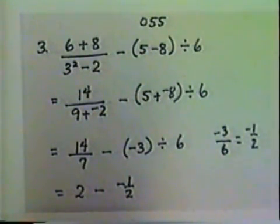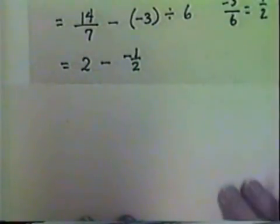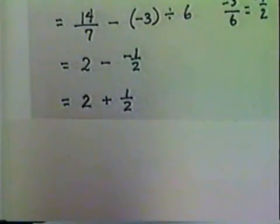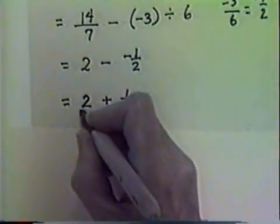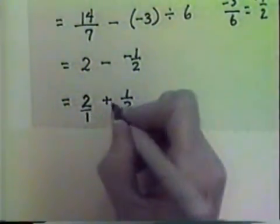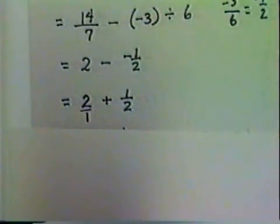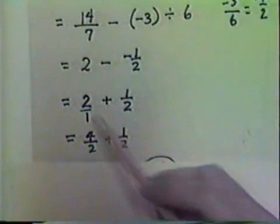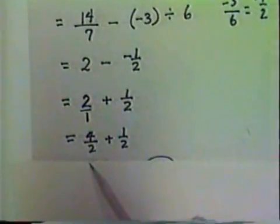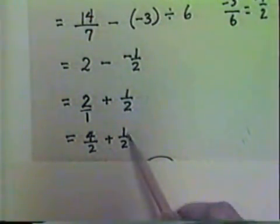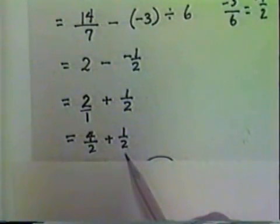Now our single operation is subtract. To subtract a number, we add its opposite. And so we write 2 add the opposite of negative 1 half, which is positive 1 half. 2 plus 1 half. The 2 has an understood denominator of 1. Adding fractions, we need a common denominator. The common denominator is 2. 2 over 1 converts to 4 over 2. 4 over 2 plus 1 over 2 is 5 over 2.